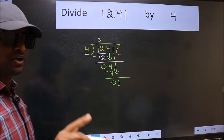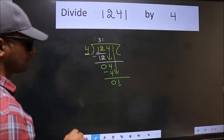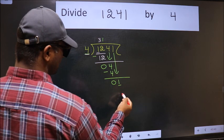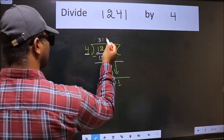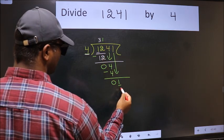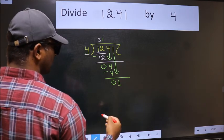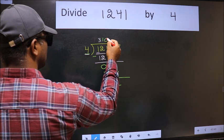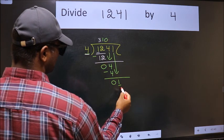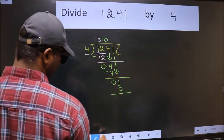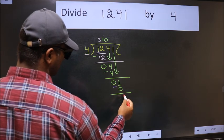Instead of that, what you should think of doing is: which number should we take here? If I take 1, we will get 4. But 4 is larger than 1. So what we should do is take 0. So 4 into 0 is 0. Now we should subtract. We get 1.